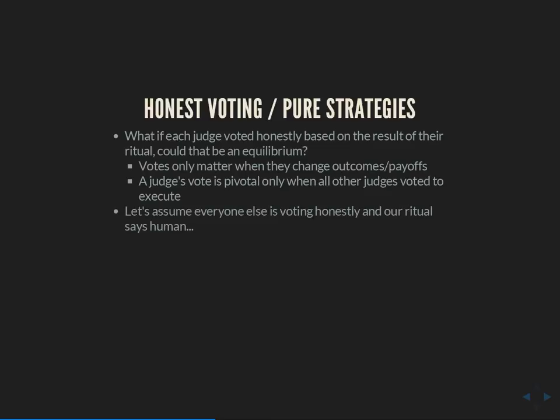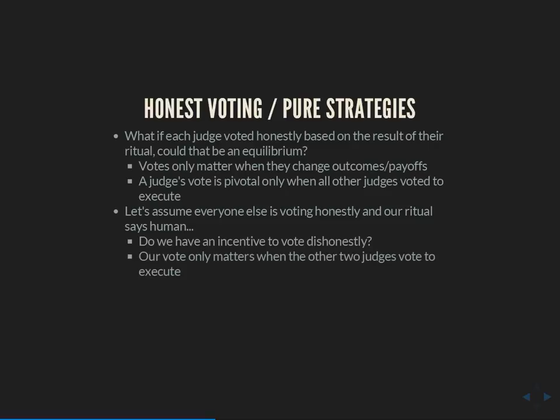Let's assume everyone else is voting honestly and our badger milk ritual says 'human.' Do we have an incentive to vote dishonestly? Our vote only matters when the other two judges voted to execute — and they're voting honestly. So both of those other judges' signals said the accused is a werewolf. Given that, what are the odds the accused is actually a werewolf when our own ritual says he's not?